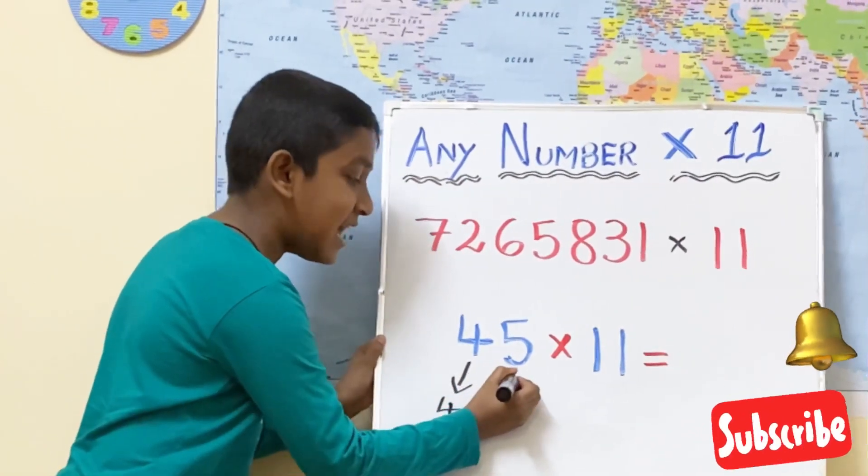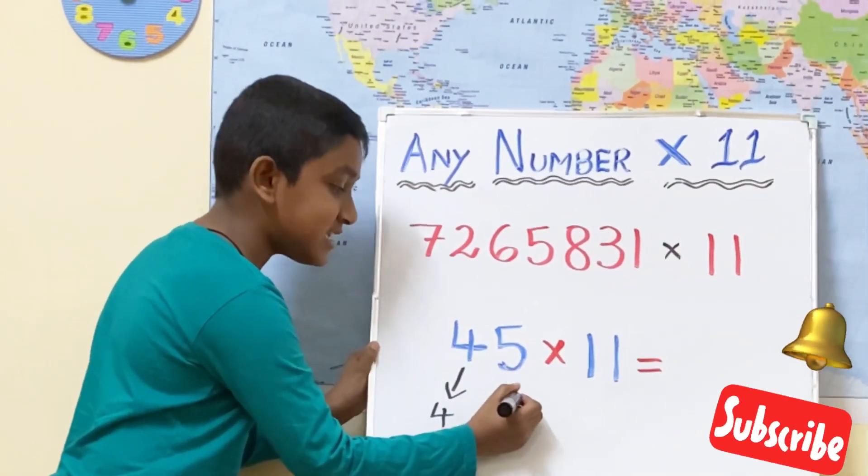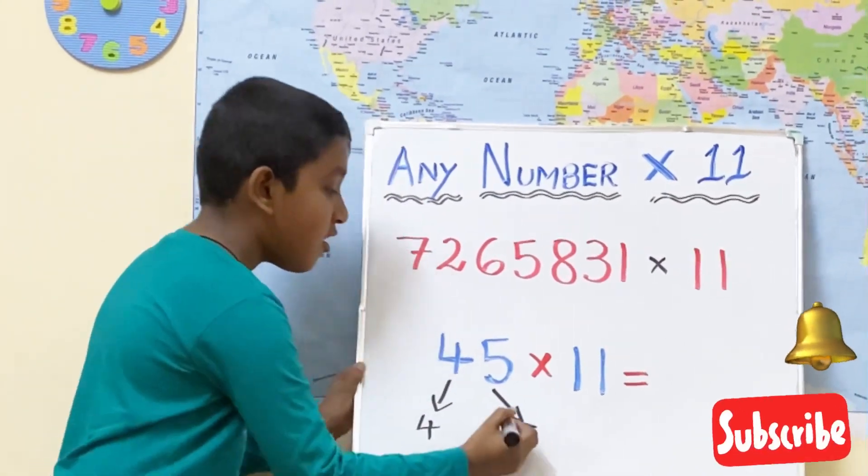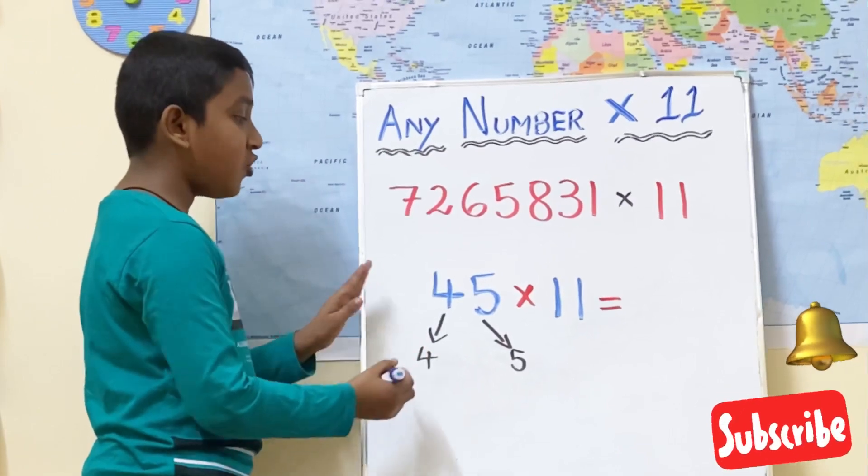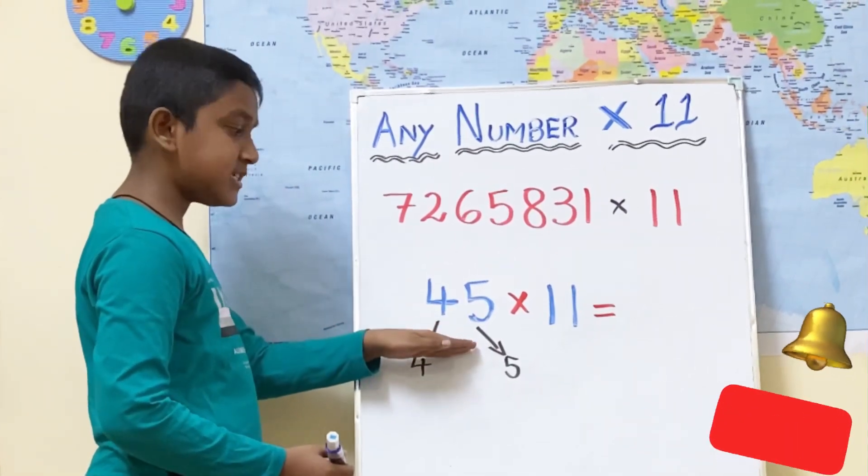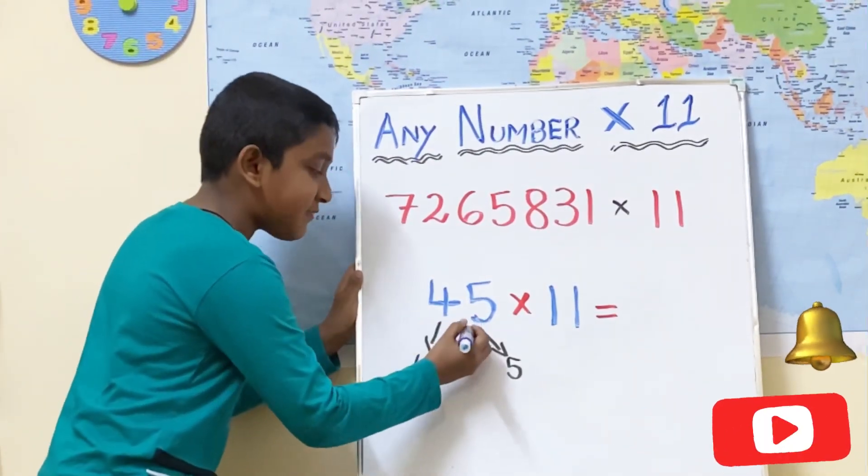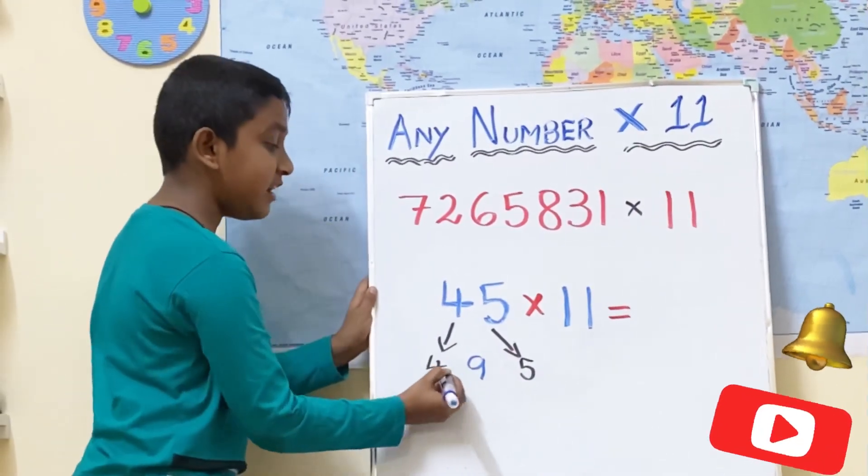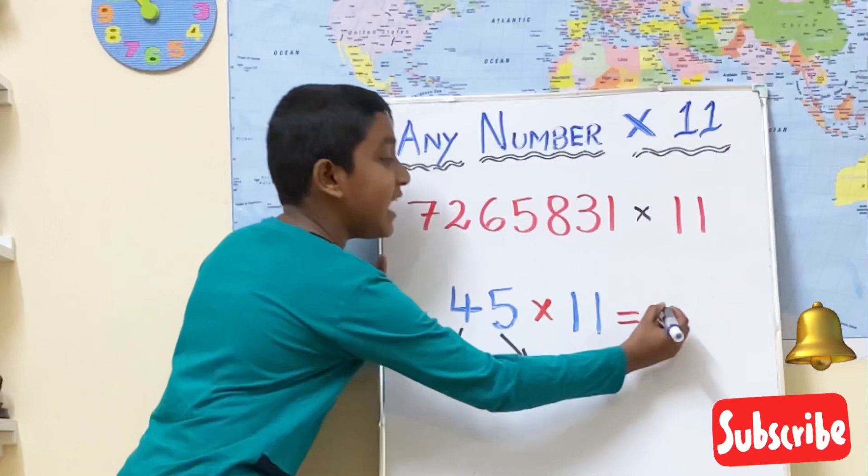Likewise, the last digit of the question is the last digit of the answer. For the middle number, we have to add the question numbers together. 4 plus 5 is equal to 9. So here we get the answer as 495.